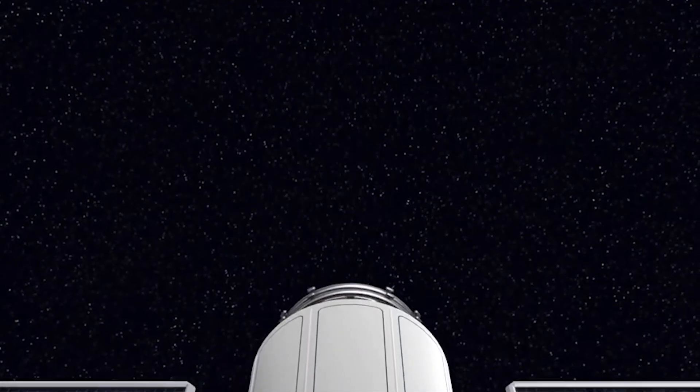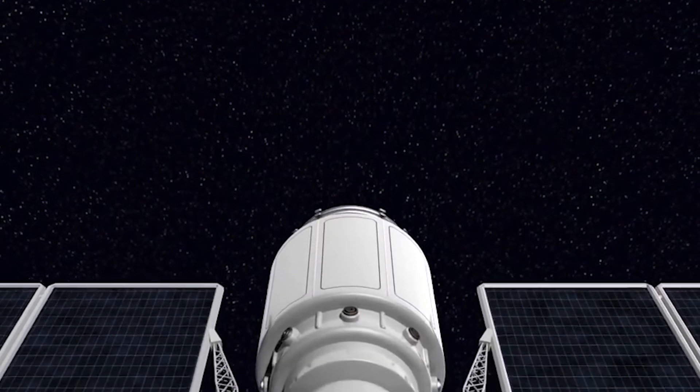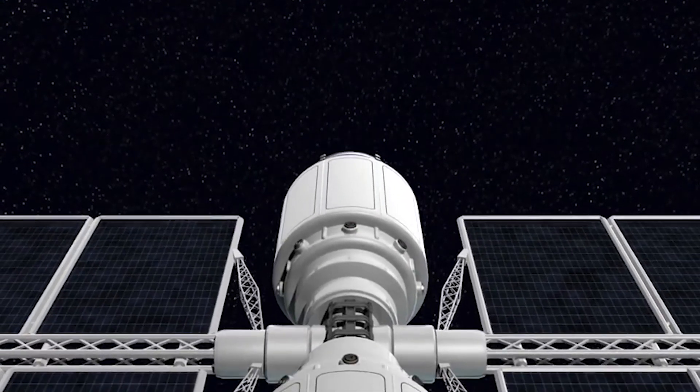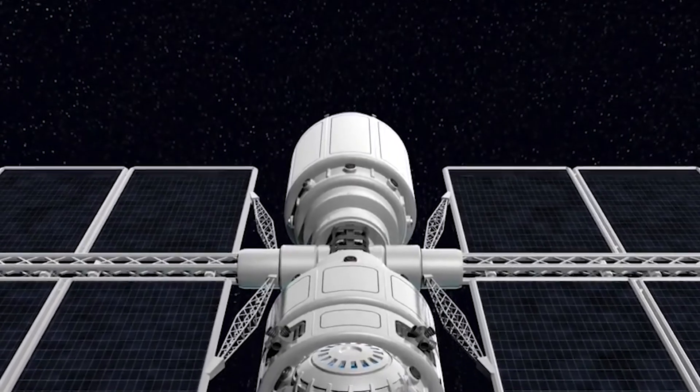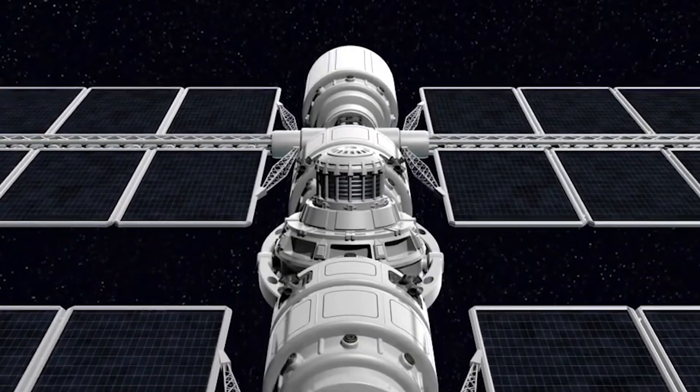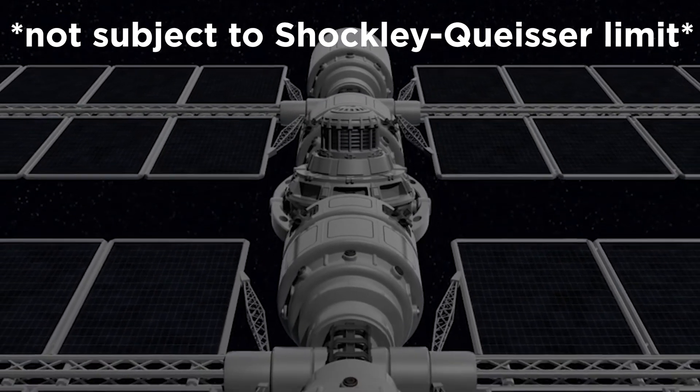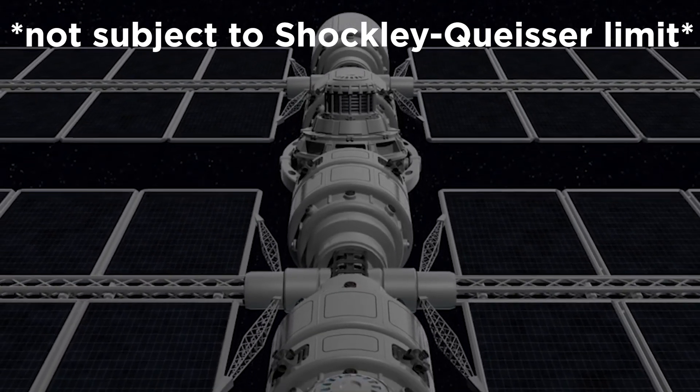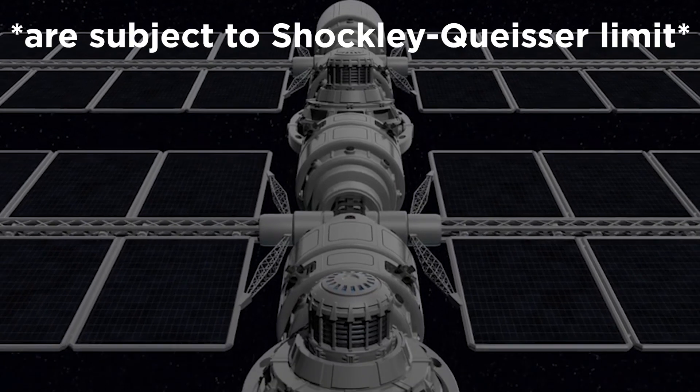While some reports note that the rollable solar arrays of the NASA International Space Station can achieve efficiencies of about 34 percent compared with typical Earth-based panels that have efficiencies of about 20 percent, this is due to the panels being multi-junction solar cell arrays which are made of gallium arsenide as opposed to single-junction solar arrays which are made of silicon.